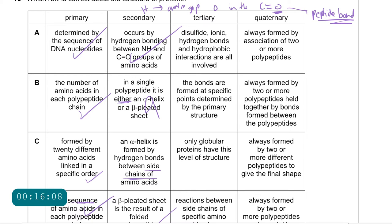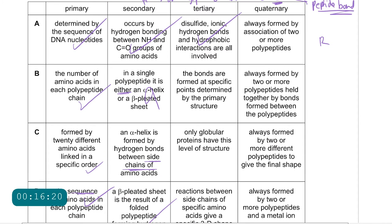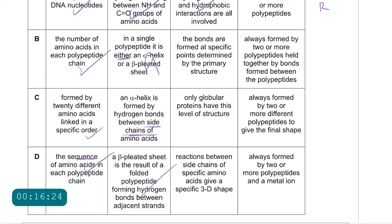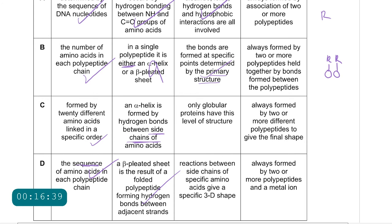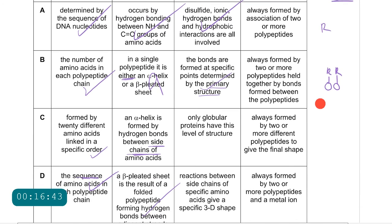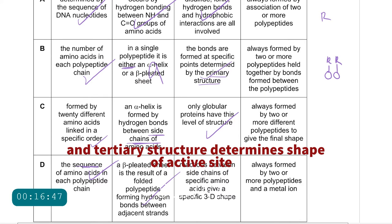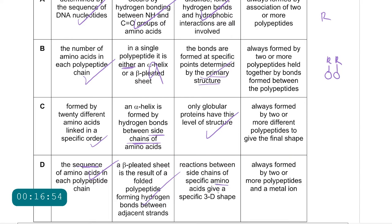For the tertiary structure: A — disulfide, ionic, hydrogen bonds and hydrophobic interactions are all involved between R groups — correct. B — the bonds are formed at specific points determined by the primary structure — correct, because the primary structure contains the amino acids which contain the R groups. C — only globular proteins have this level of structure — correct; examples include enzymes. D — reactions between side chains of specific amino acids give a specific 3D shape — correct.